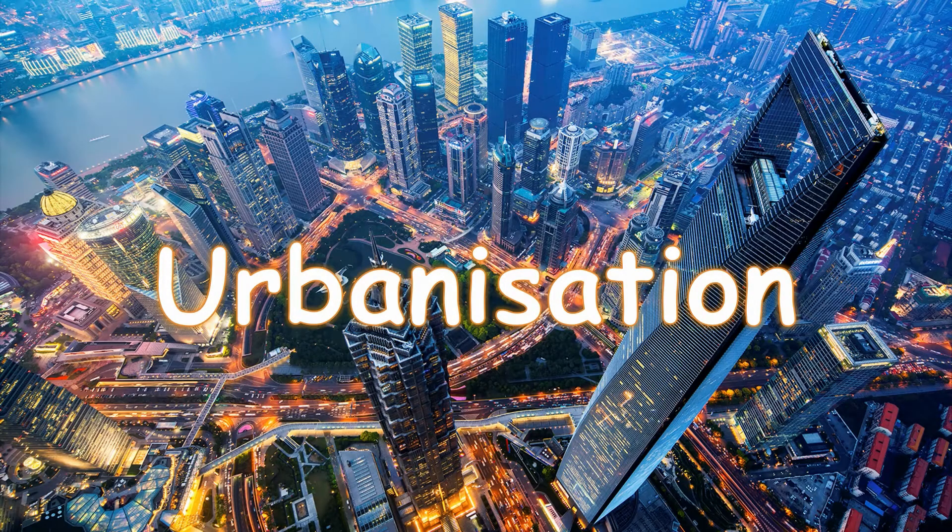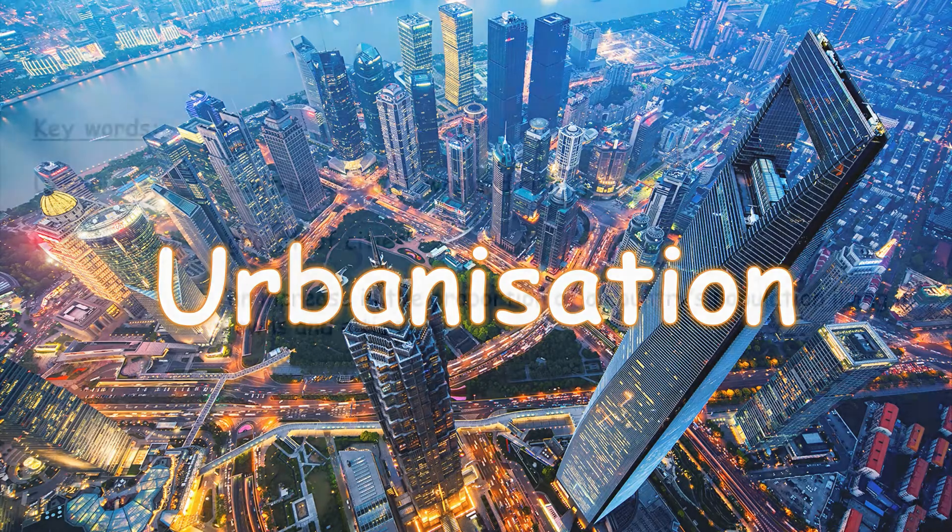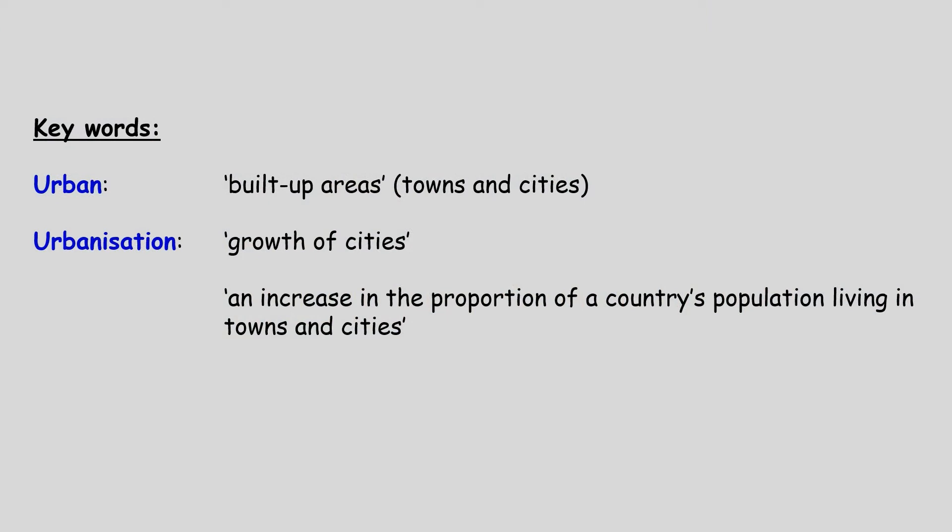This video is on the changing pattern of urbanisation, but let's start with some definitions. Urban areas are built-up areas — they have streets, concrete, tarmac, buildings, towns and cities — the opposite being rural areas, which means the countryside. Urbanisation is the growth of cities, or for a grade 9 answer, it's an increase in the proportion of a country's population living in towns and cities.